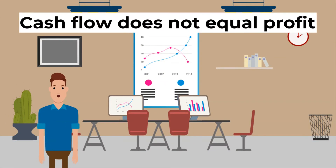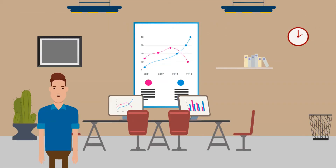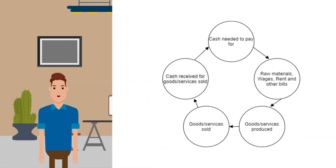Cash flow is not the same as profit. Profit is the surplus amount after total costs have been deducted from sales — it includes all income and payments incurred in the year, whether already received or paid, or not yet received or not yet paid. In a cash flow statement, only those elements paid by cash are considered.